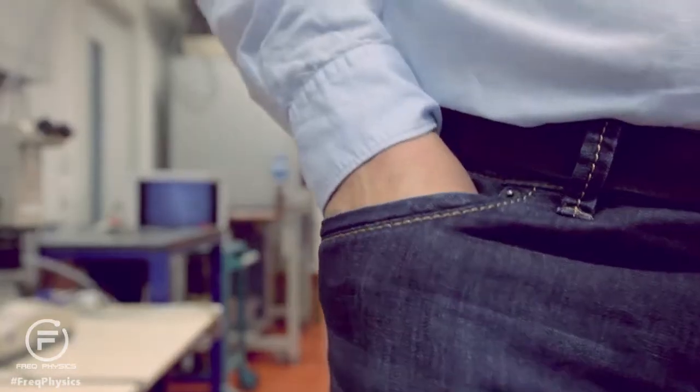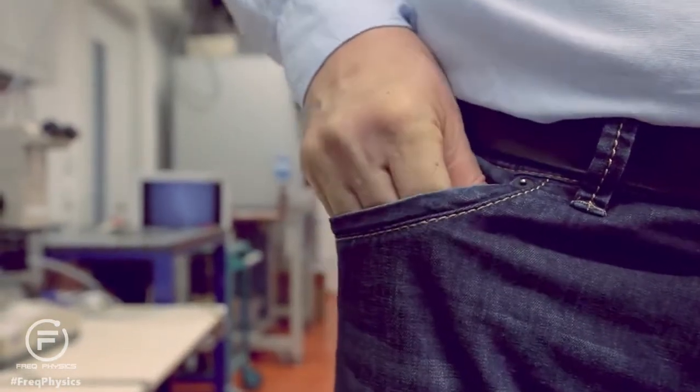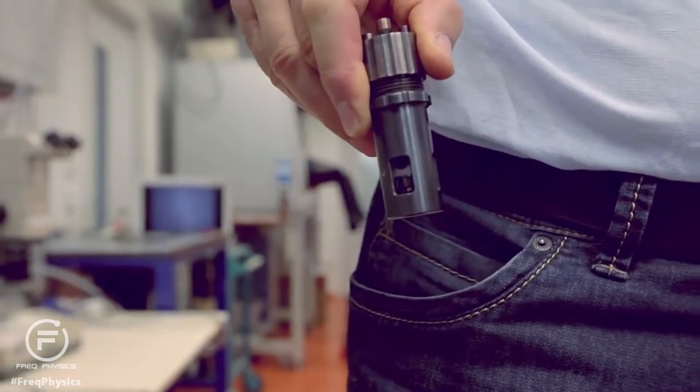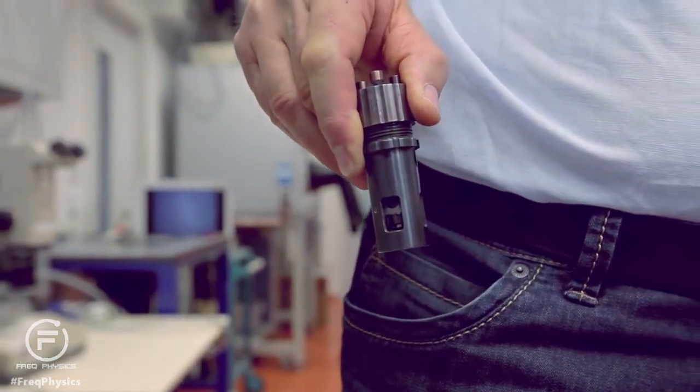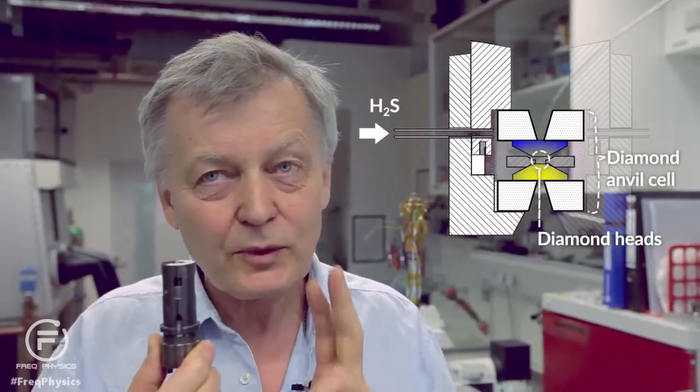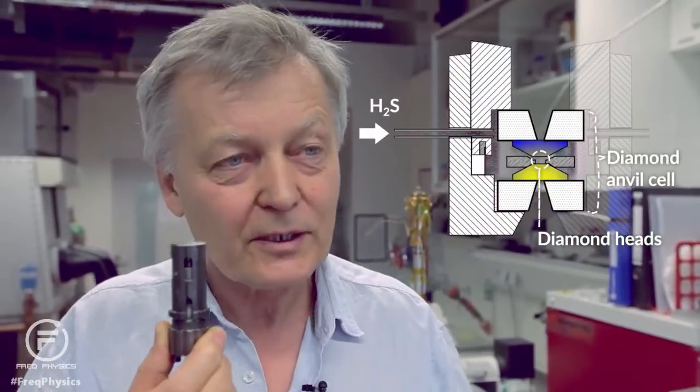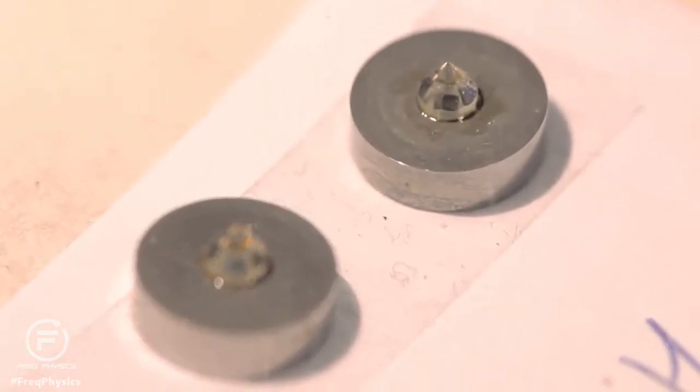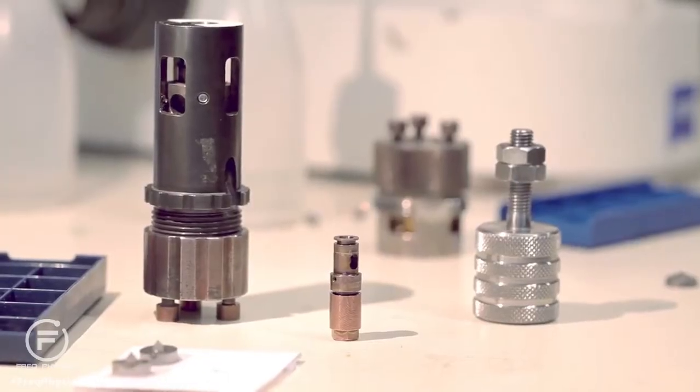The equipment used to reach this requisite very high pressure on earth is surprisingly unspectacular and can even be carried around in your pocket. Inside of this cell, we have a sample which is squeezed between two diamond anvils. And in such a way, we produce very high pressure. But the price for this high pressure is a small sample, a few micrometers.